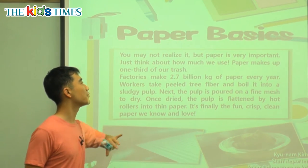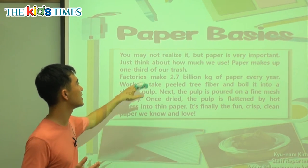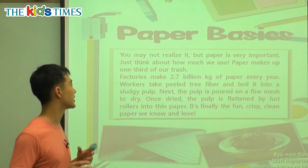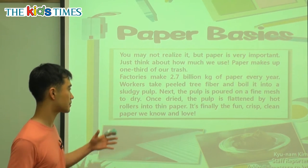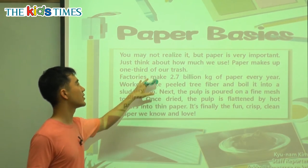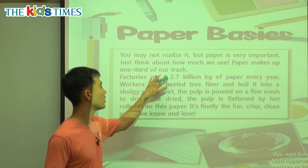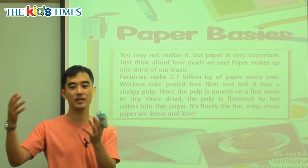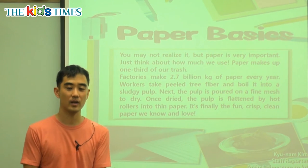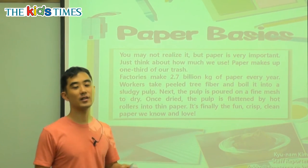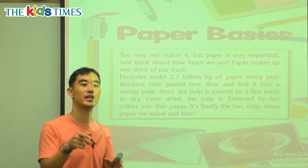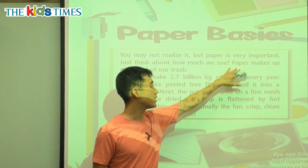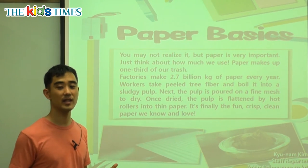You may not realize it — and realize means to know — but paper is very important. Just think about how much we use. Paper makes up one third of our trash. So if we have all our garbage — paper, plastic, wood, candy, food, all of it — one third, or 33% of it, is made up of paper.